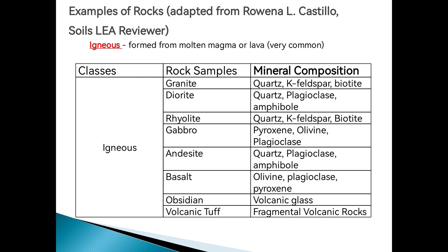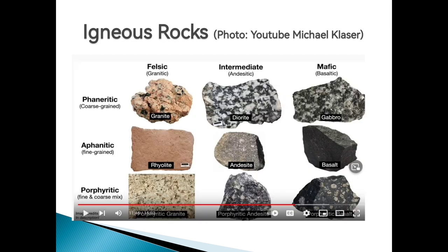These are some examples of igneous rocks. We have light-colored rocks, intermediate, and darker-colored rocks. We have phaneritic, which are coarse-grained — some rocks have very fine texture, while others are coarse when you feel them. We also have aphanitic, which is fine-grained, and porphyritic, which consists of a mix of fine and coarse. Felsic refers to light-colored rocks, then we have intermediate, and then mafic or basaltic, which is darker. So from granite, we have diorite, and then gabbro — almost the same formation but different in color because of differences in their mineral content.